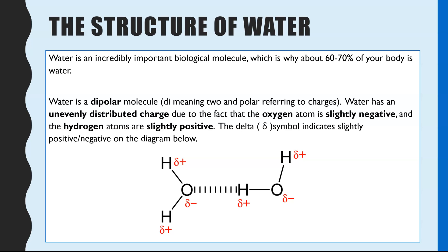The first thing to look at is the structure of water. This is one of the biological molecules in the AQA specification and it's a really important molecule. This is why 60-70% of your body is made up of water. It's a dipolar molecule — sometimes described as just a polar molecule — meaning it has two different regions that are charged, and it's this uneven distribution of charge that leads to so many of its important properties.